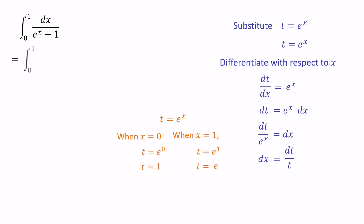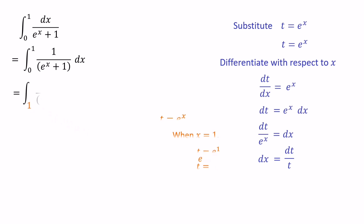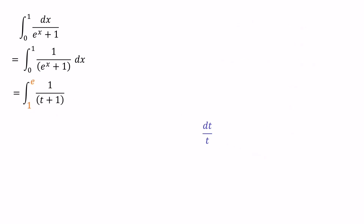Now, with lower limit 1 and upper limit e, instead of dx we can write dt over t. We need to get the integral of 1 over t times t plus 1.